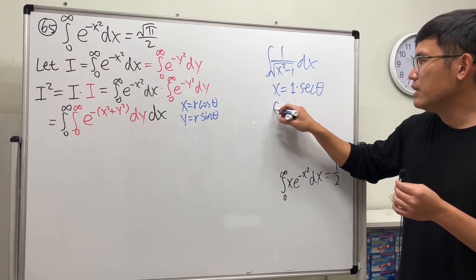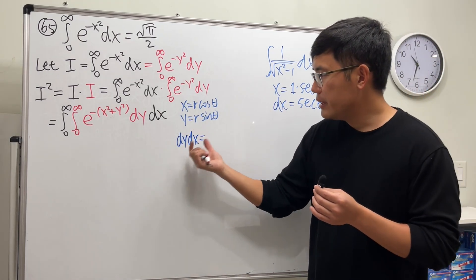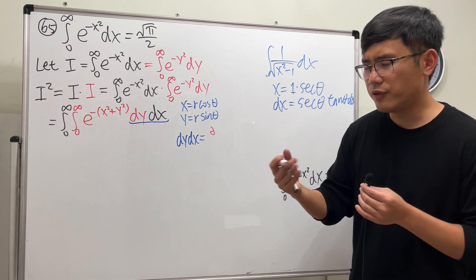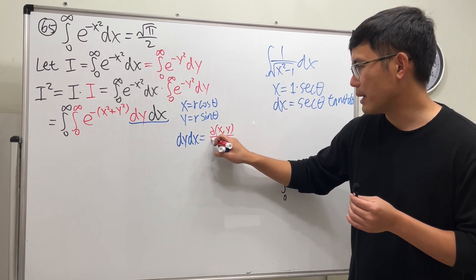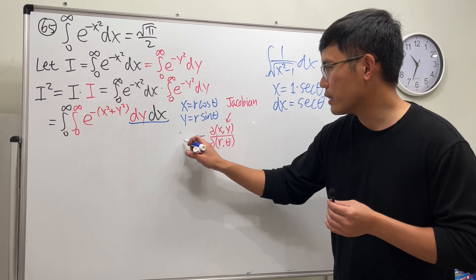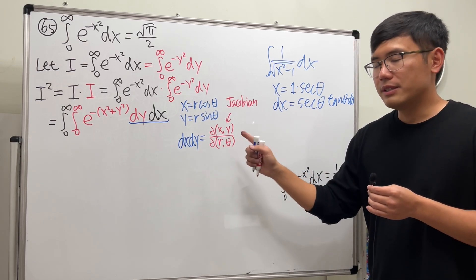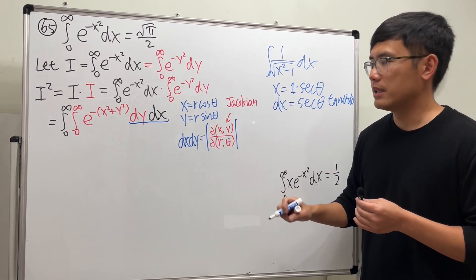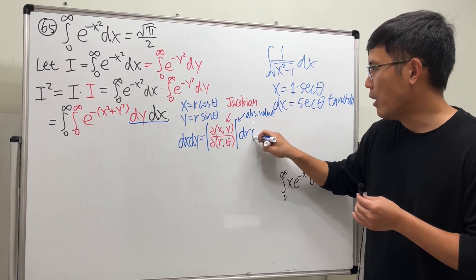What we're going to do is figure out the so-called Jacobian — here is the notation for it. I'll write it as the Jacobian of x, y with respect to r, theta. We take the absolute value of this Jacobian, and then multiply by dr d-theta. That is the rigorous calculus way to handle coordinate changes.